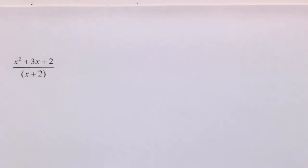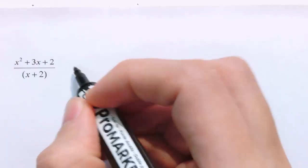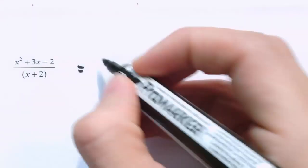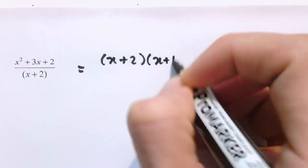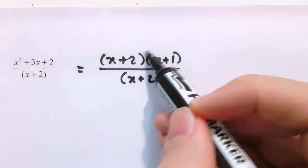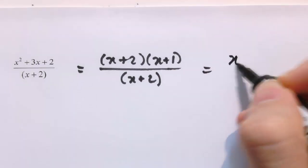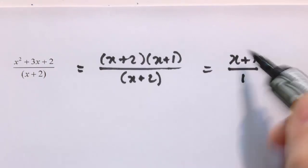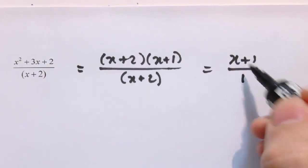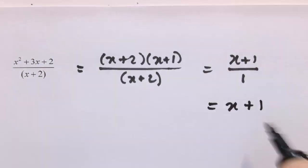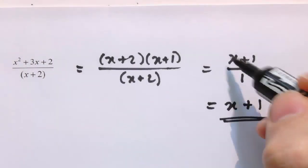The hardest examples involve factorising quadratics. Here we've got x squared plus 3x plus 2 over (x plus 2). If you factorise the top, you get (x plus 2) times (x plus 1), and on the denominator we've got (x plus 2). So the factor (x plus 2) cancels, leaving just (x plus 1) over 1. Students often leave their answer in this form, but that's not fully simplified — something divided by 1 is just itself. So the final answer is just x plus 1.